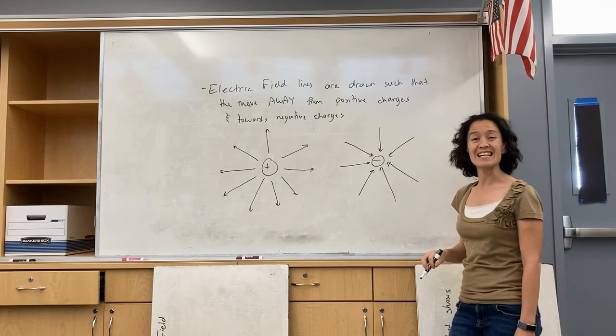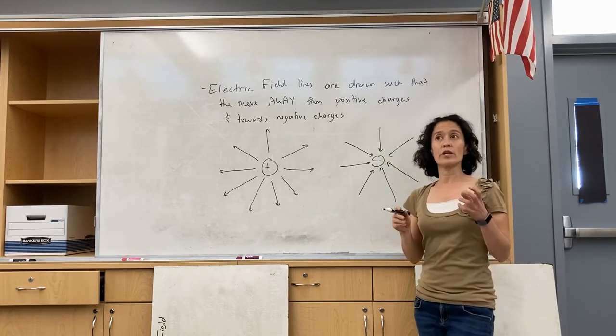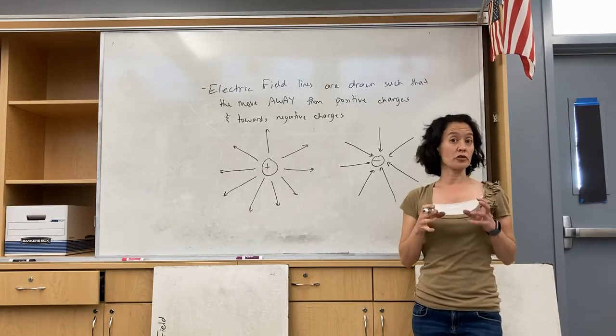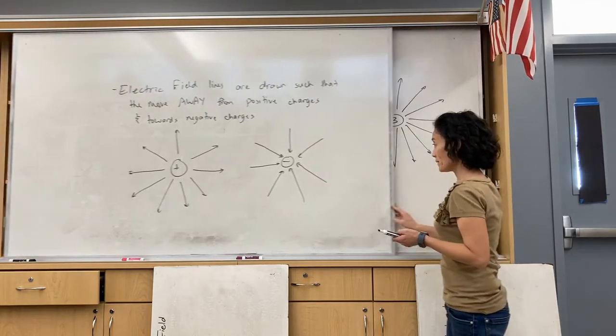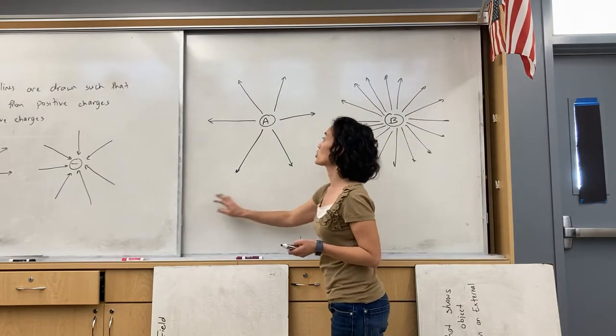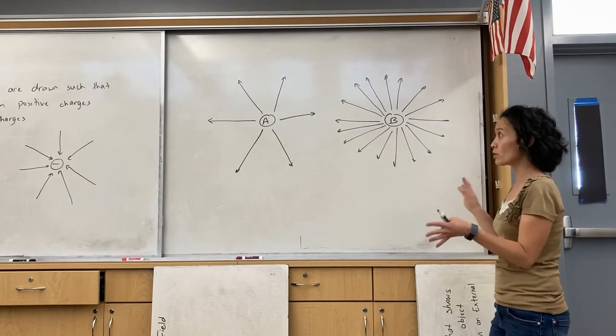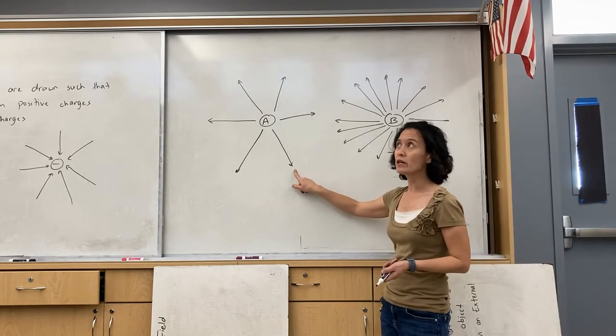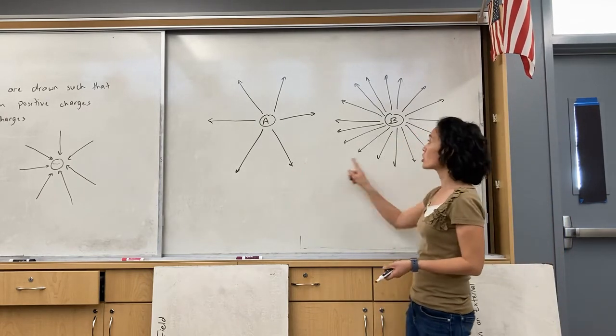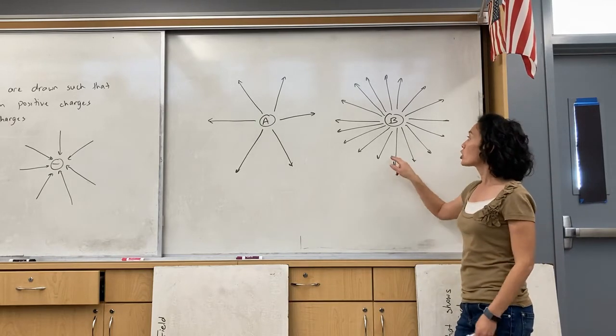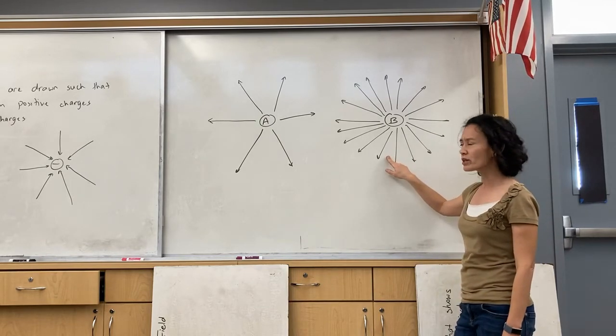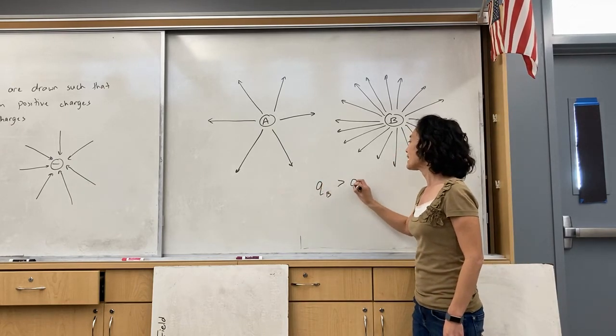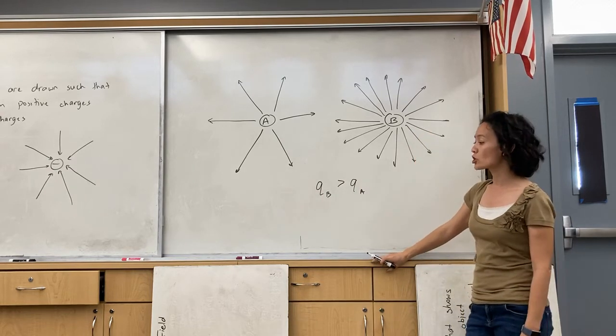The other thing that can help us is the density of field lines. So the higher the density of electric field lines indicates the stronger electric field at a given point. If I had these two charges, charge A and charge B, and these were the physical field lines that were drawn, you can see that the arrows are going away, so they both have positive charges. But charge B has way more field lines, and so that means that charge B has a greater magnitude of charge than charge A.